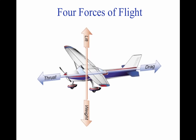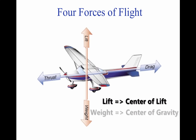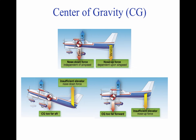Lift and weight always act through the airplane's center of lift and center of gravity, respectively. Center of gravity is the point on the aircraft in which, if the airplane were suspended, it would remain level.